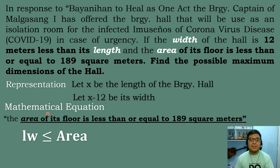Find the possible maximum dimensions of the hall. The first step is to represent the problem. We let x be the length of the barangay hall and x minus 12 be its width. Since we are dealing with a rectangular floor, we will use the formula: area equals length times width.